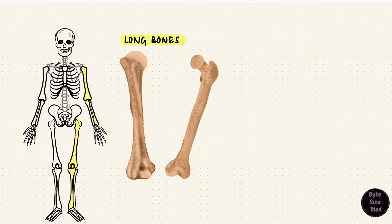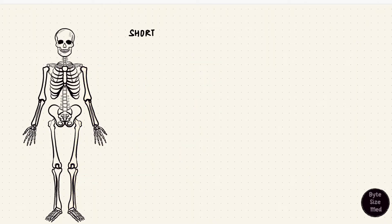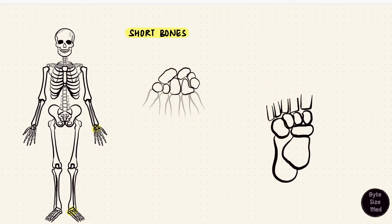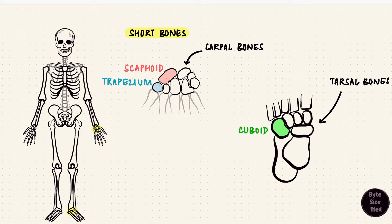So there's the diaphysis, the epiphysis, and the metaphysis — those are the parts of a long bone. Long bones are important for movement because they mainly form part of the limbs. Short bones, on the other hand, are almost as wide as they are long. The small bones of the hands and feet are good examples: the carpal bones and the tarsal bones, like the scaphoid and trapezium in the hand, and the cuboid and cuneiform bones in the foot.